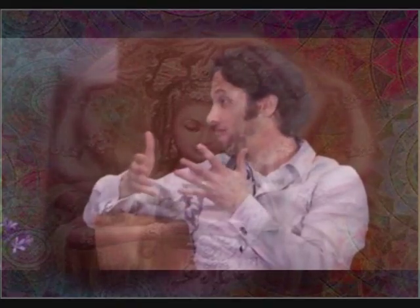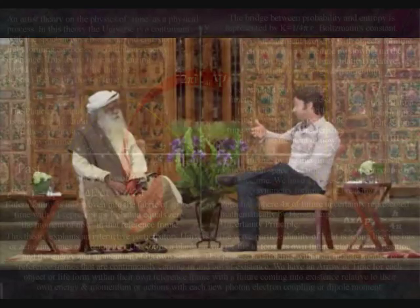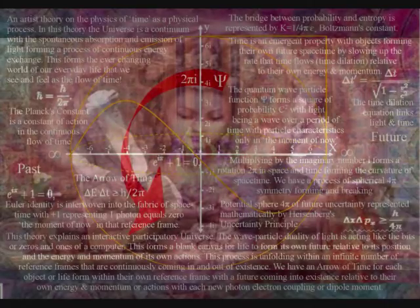Time seems to be a construction of the brain because we can easily manipulate it in the laboratory so that you think something lasted longer or shorter or something happened in a different order. And there are many physicists like Einstein who were very clear on this point that time doesn't actually exist, but we're trapped inside of it.